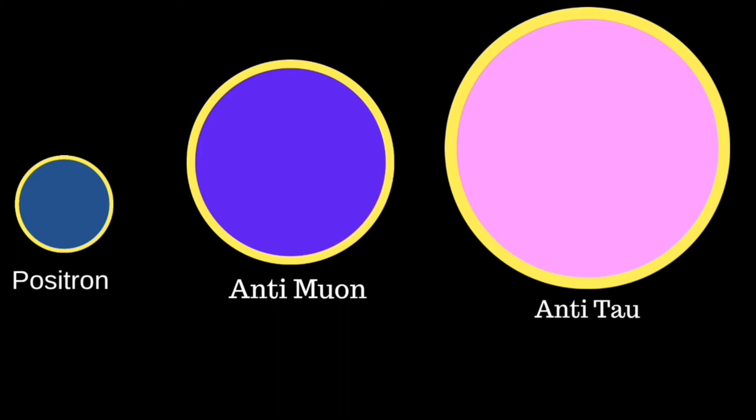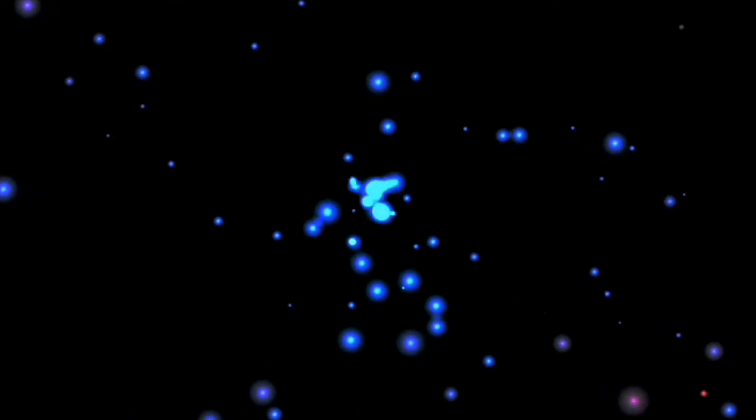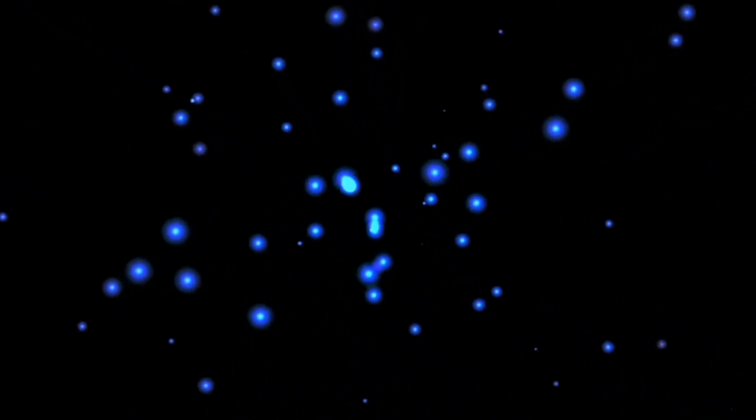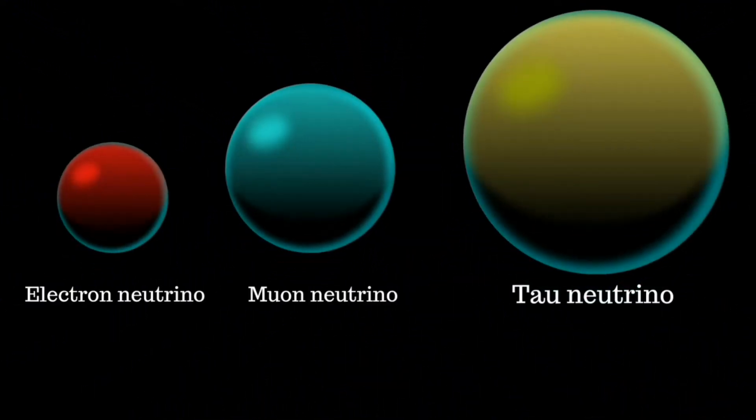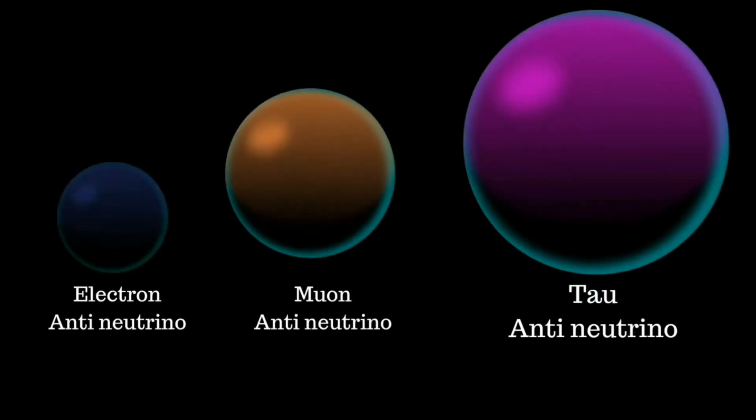Neutrino particles are also leptons, very similar to an electron but have no electrical charge and a very small mass which might even equal zero. There are three types of neutrinos: the electron neutrino, the muon neutrino, and the tau neutrino, as well as their antiparticles.